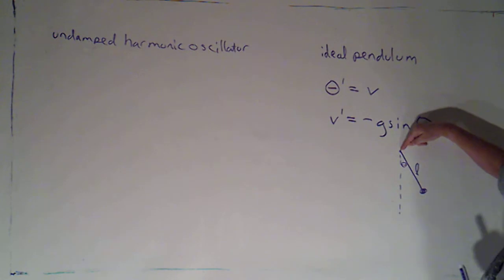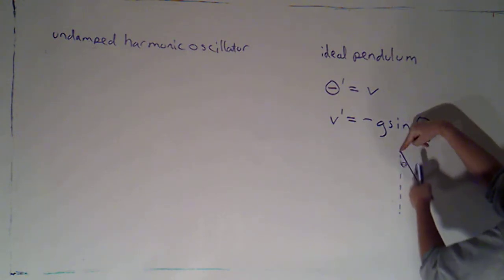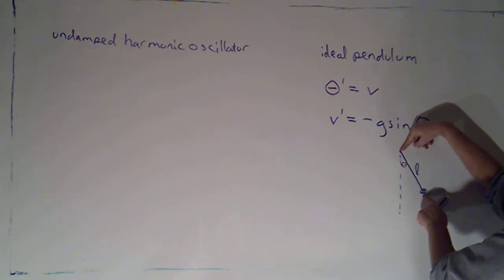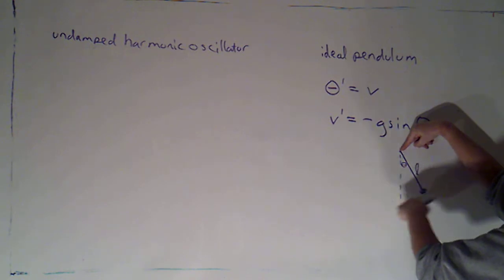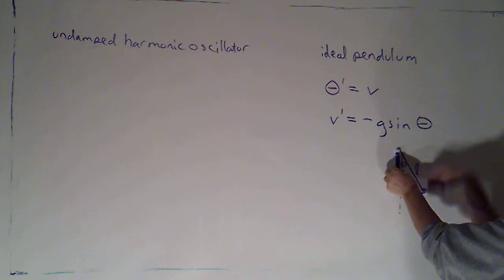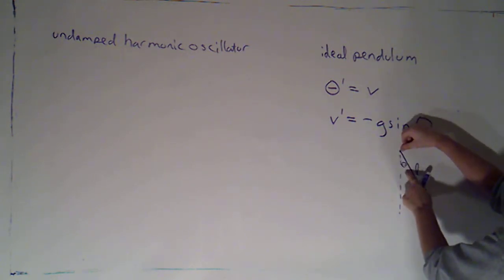So basically, we've got a pendulum that's attached to a wall somewhere here. There's a rod of length L with a mass at the end of that. And it's swinging back and forth. We set up our system so that theta is the angle that we make with this downward axis measured in this direction.